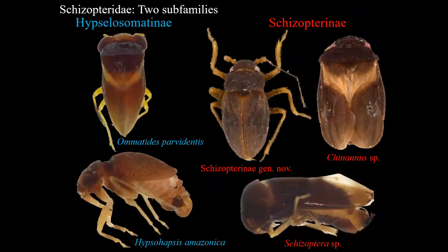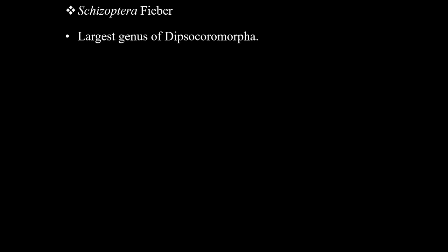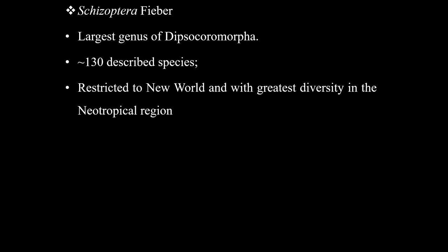Schizopteridae is currently divided into two subfamilies: Hypsalosomatinae, the big-eyed minute litter bugs, and Schizopterinae. I was basically working on this genus within Schizopterinae — the genus Schizoptera — which is the largest genus of Dipsochromorpha with more than 130 species after this taxonomic revision. They are restricted to the New World, with the greatest diversity in the Neotropical region.